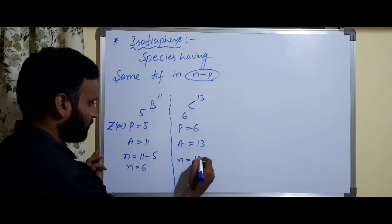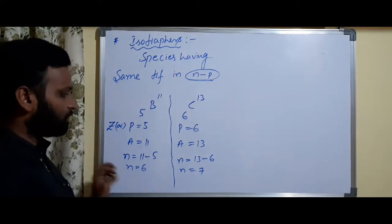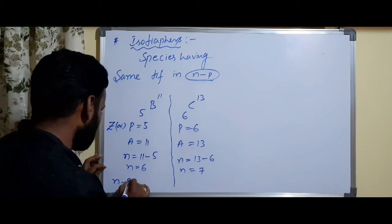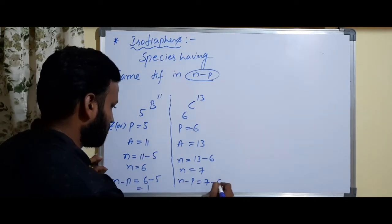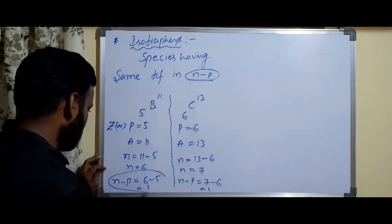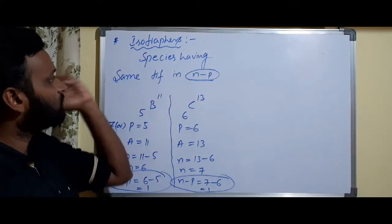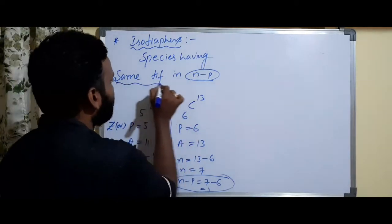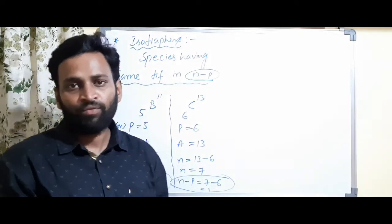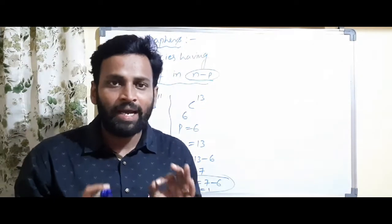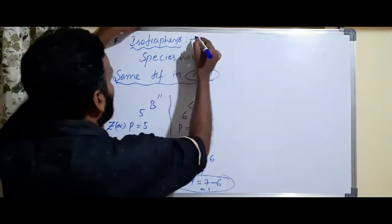N minus P for boron: 6 minus 5 = 1. N minus P for carbon: 7 minus 6 = 1. Both have N minus P value equal to 1. So they are called isodiaphores. Isodiaphores means species having the same N minus P value.